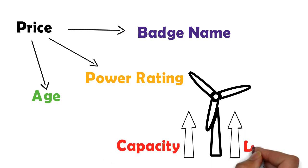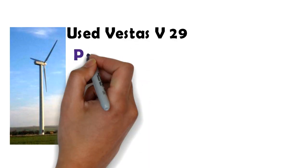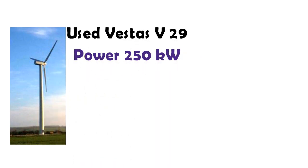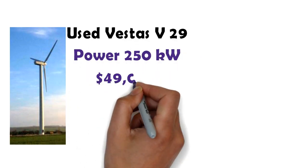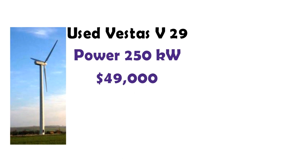Generally, the bigger the size of the wind turbine, the more the percentage of discount. Here is a sample of the price: a Vestas V29 with a capacity of 250 kilowatts can be purchased for merely $49,000.